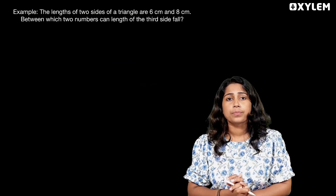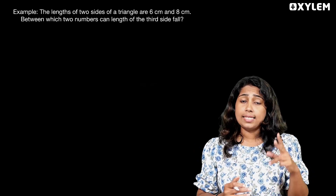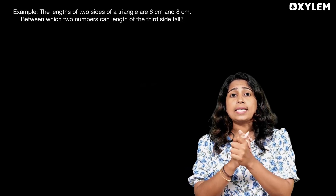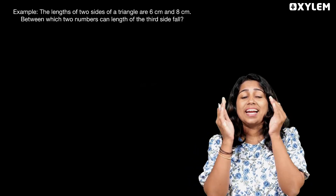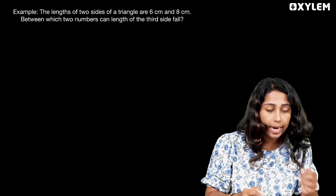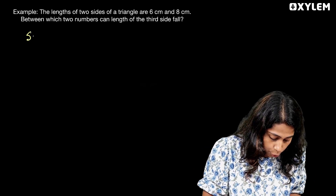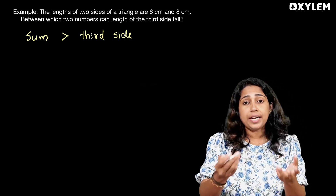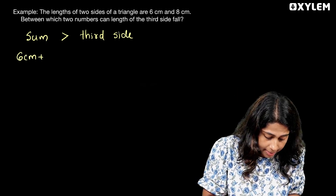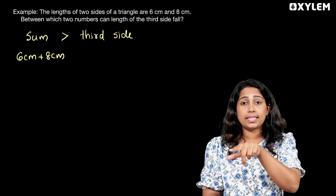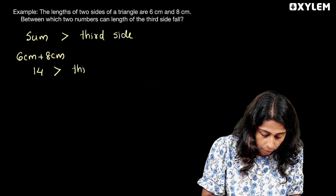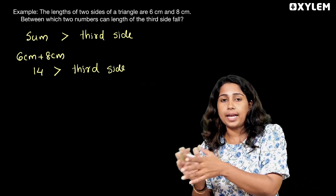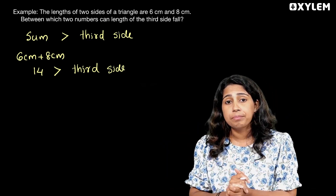Let me ask you this question. The length of two sides of a triangle are 6 cm and 8 cm. Between which two numbers can the length of the third side fall? The sum of the two sides should be greater than the third side. The sum of 6 cm and 8 cm is equal to 14.